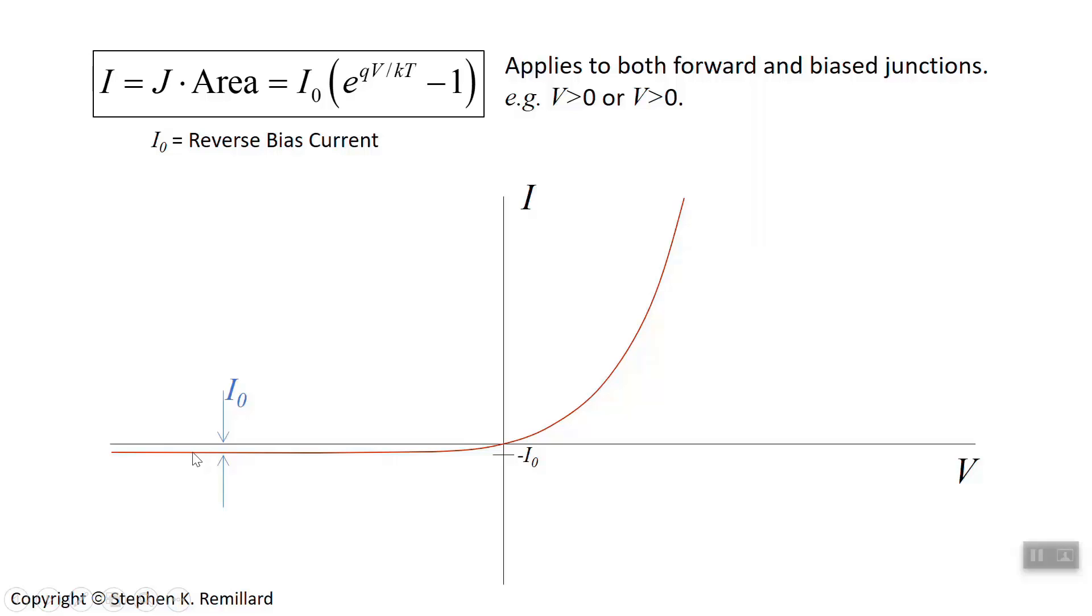you have this avalanche of impact ionizations, that is the electrons that have been more and more accelerated as they have more and more electric field to accelerate in, eventually collide with such high energy that they ionize the atoms and create more electrons. And that's an avalanche effect.